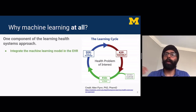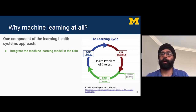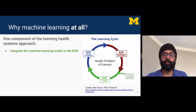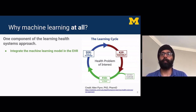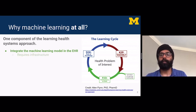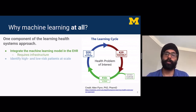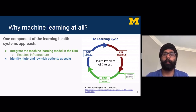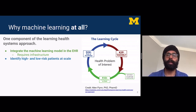Within this context, we need to be able to run machine learning models in our electronic health record, which means we have to integrate them so they can routinely generate data, even if that data is just being silently recorded and not shown to anyone, as part of our ability to figure out how good these models are. And this requires infrastructure. The main use case of machine learning in healthcare, in my view, is that it lets us identify high-risk and low-risk patients at scale.